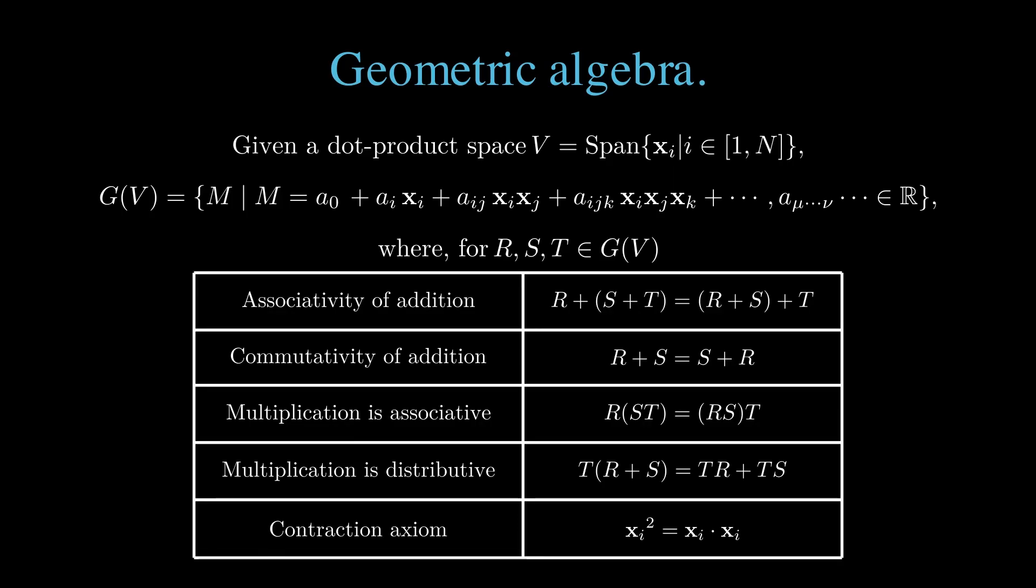The square of any vector products found within a given multivector are subject to the contraction axiom. That is, the square of any vector is the dot product of that vector with itself, i.e., the squared length of that vector. The simplest geometric algebra is that of the Euclidean plane, which is characterized by a pair of orthonormal unit vectors, e1, e2.